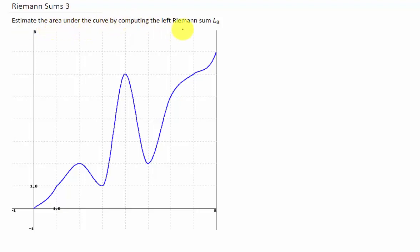Let's estimate the area under the curve by computing the Riemann sum L8. The subscript 8 tells us that we're going to split this interval from 0 to 8 into 8 subintervals, and the L tells us that we're going to use the left Riemann sum.